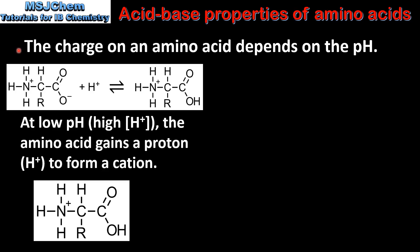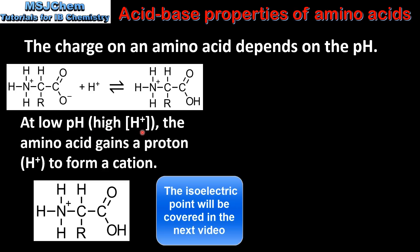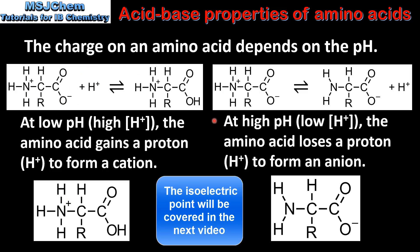The charge on an amino acid depends on the pH. At low pH, which is a high concentration of hydrogen ions, the amino acid gains a proton to form a cation. So at low pH this reaction is favored where the amino acid gains a proton to form a positive ion. At high pH, which is a low concentration of hydrogen ions, the amino acid loses a proton to form an anion. So at high pH this reaction is favored where the amino acid loses a proton to form a negative ion.